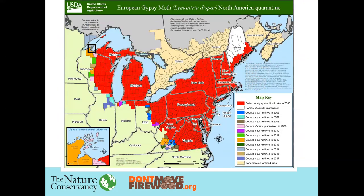It used to be that the emerald ash borer quarantine had a very similar look and feel to the European gypsy moth quarantine, but that is no longer the case. Emerald ash borer has spread much faster and has fewer management tools than European gypsy moth, so this quarantine is now a lot smaller. Nonetheless, you cannot move many materials out of these quarantined areas into adjacent or non-adjacent areas because of the presence of European gypsy moth. Firewood of any species is a quarantined and regulated item throughout the European gypsy moth area.